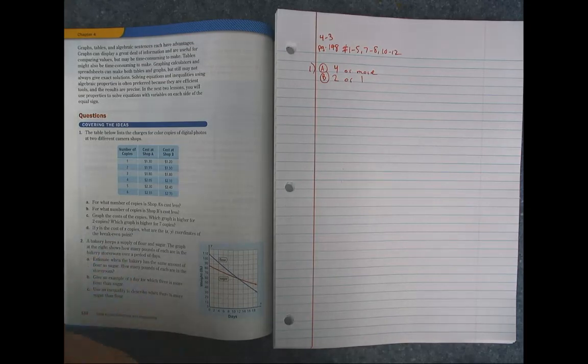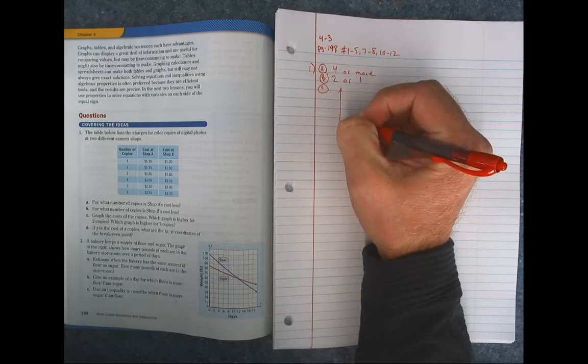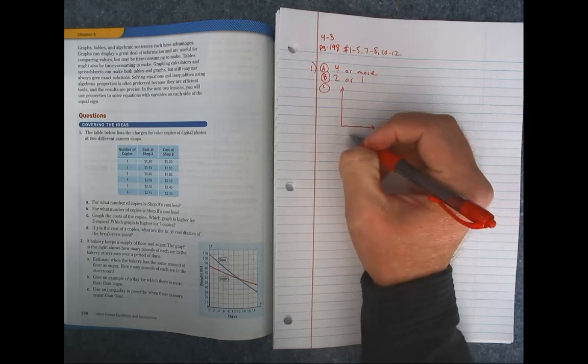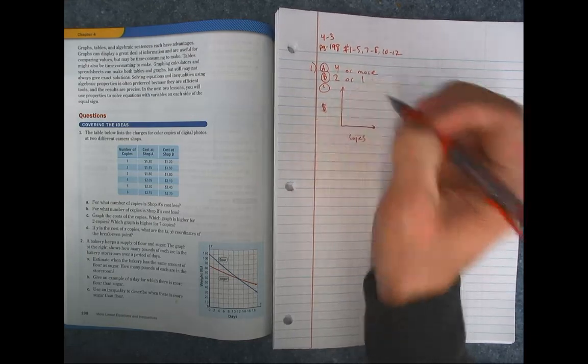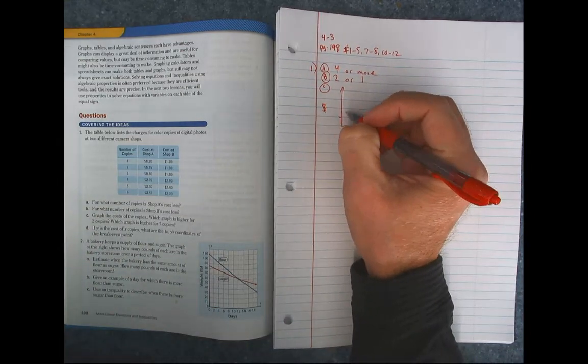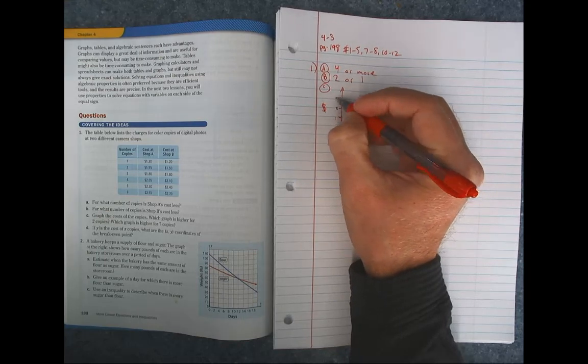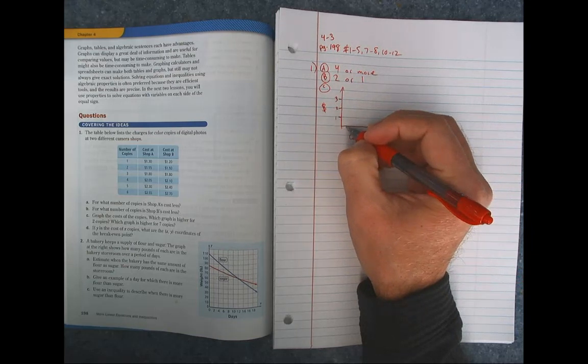Letter C. We're going to graph the cost of the copies. So we're going to put the price on this side and number of copies across the bottom. And let's see. We've got to get all the way up to $2.55. So I'm going to count by whole dollars here. $1, $2, $3, and $0.